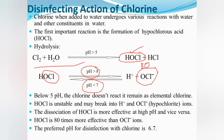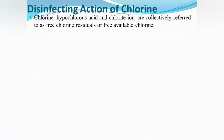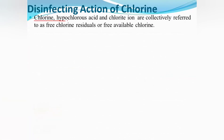The preferred pH for disinfection with chlorine is 6.7 — less than 7 but greater than 5. HOCl is 80 times more effective than the OCl⁻ ion. Chlorine, hypochlorous acid HOCl, and chloride ion OCl⁻ are collectively referred to as free chlorine residuals or free available chlorine.